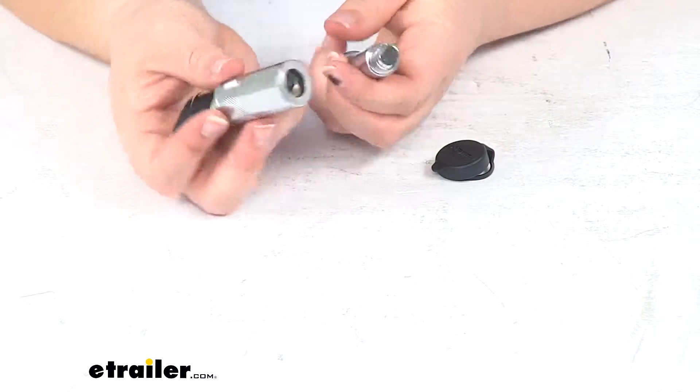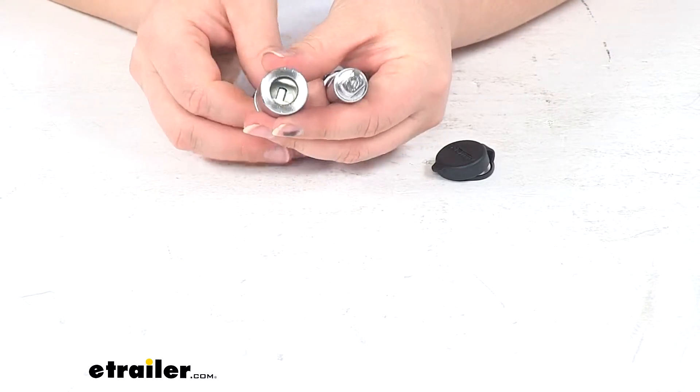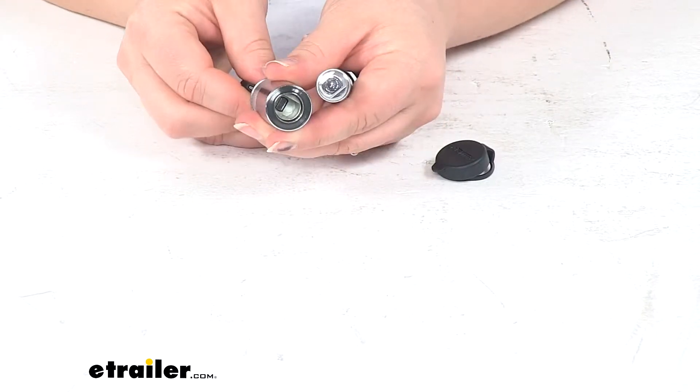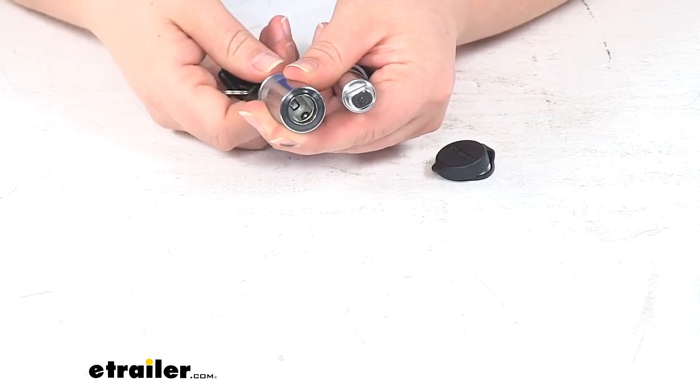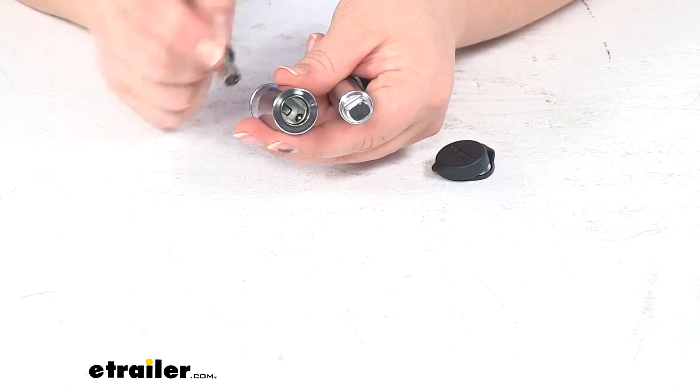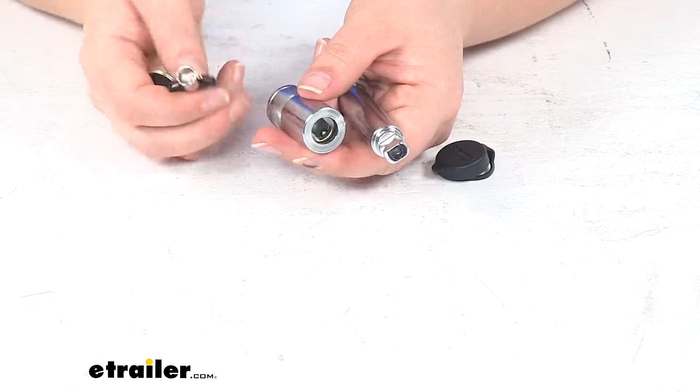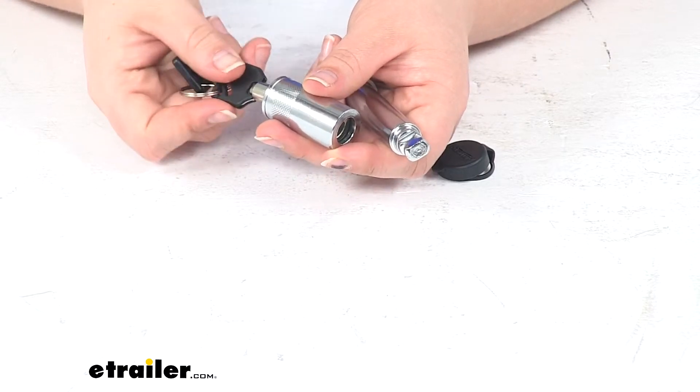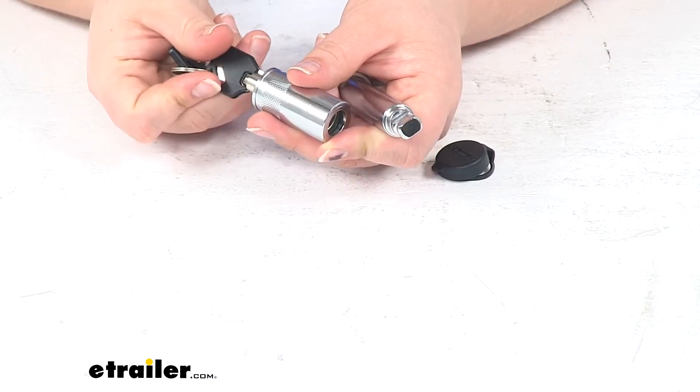We'll have this end that just slides inside that tumbler there. This is designed to prevent any false locking, so you can't get it halfway in place and remove the key. That helps you to know that any time you remove the key it's actually locked and secure.